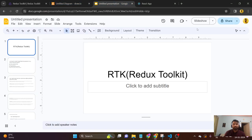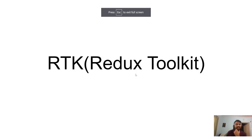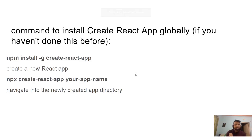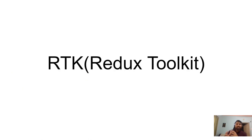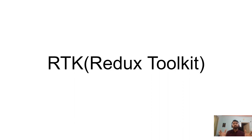We can call it RTK — Redux Toolkit. It is a shorter version of Redux where some syntax is synthesized, given a best structure, and reduces boilerplate code from Redux. So that's Redux Toolkit — it is essentially a shorter, more efficient version of Redux.